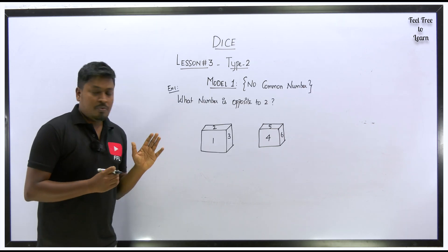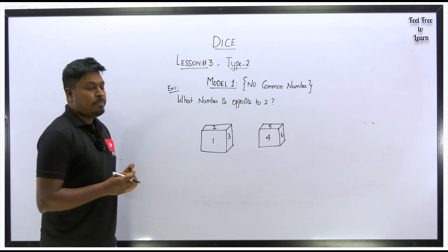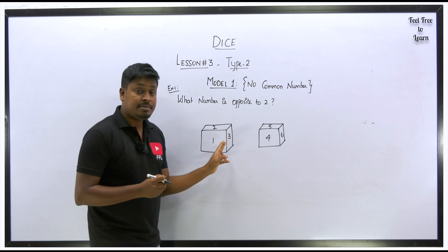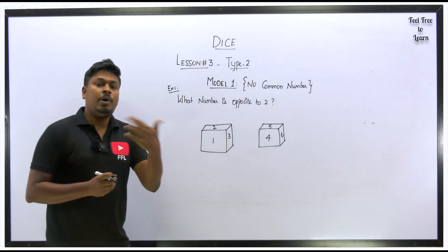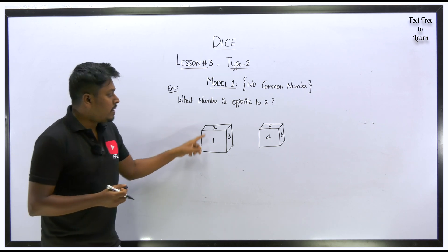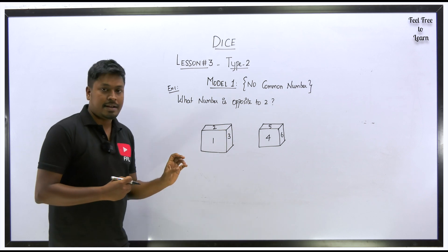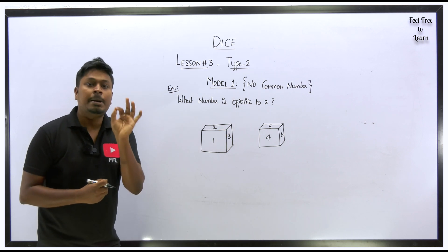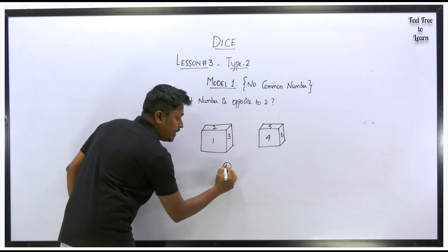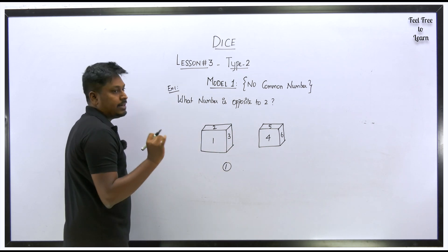Let's start with Example 1 from Model 1. The question is: what number is opposite to 2? Our target is to find which number is opposite to 2 based on both diagrams. Since there is no common number in both diagrams, you first need to check whether the given dice is a standard dice or a general dice.